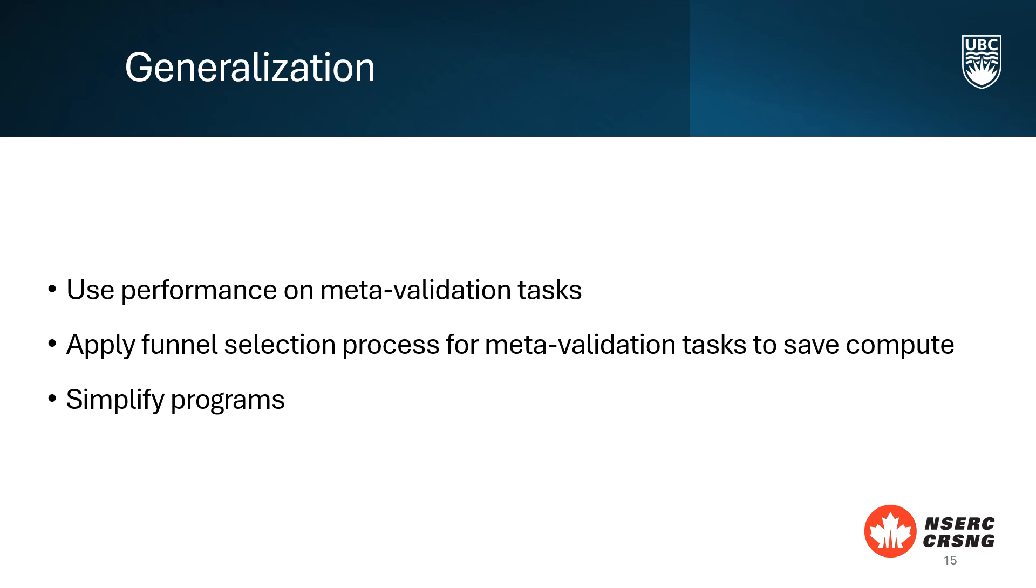Only algorithms that excel on task B are then tested on task C, which is 100 times larger. This approach helps in filtering out algorithms that don't generalize well, leading to the selection of those that perform effectively on larger real-world tasks.